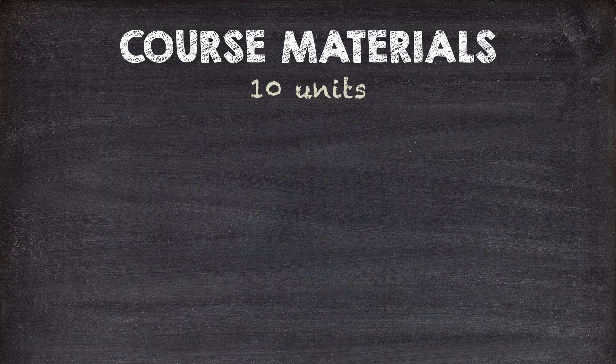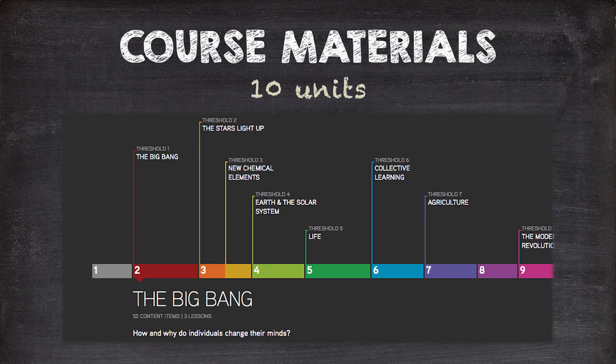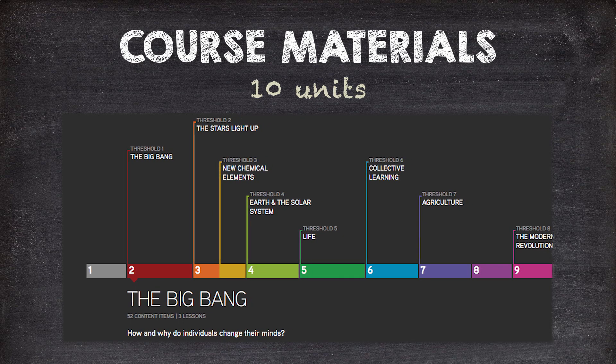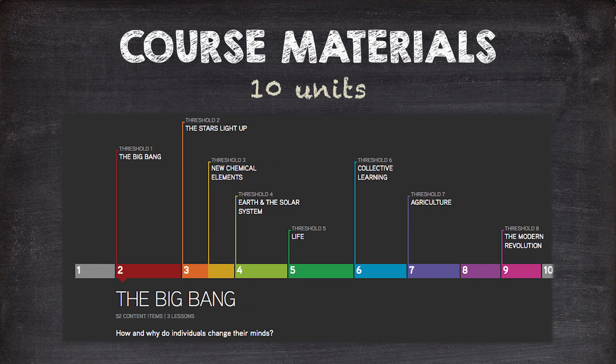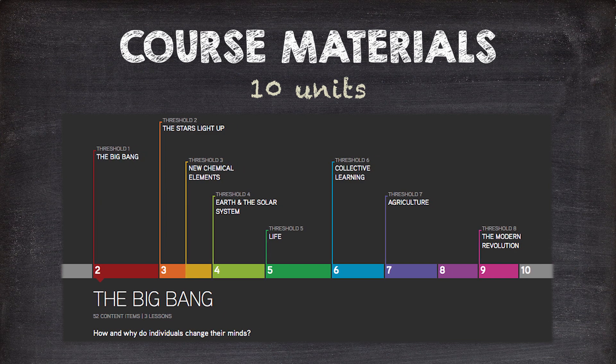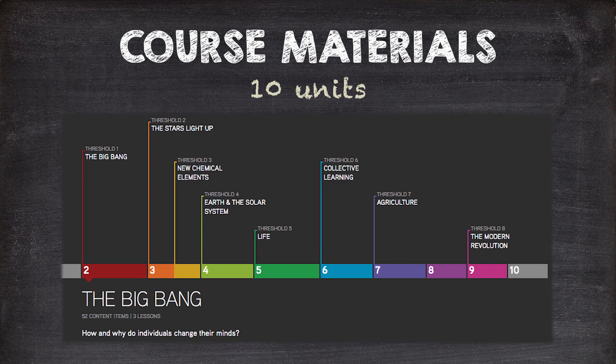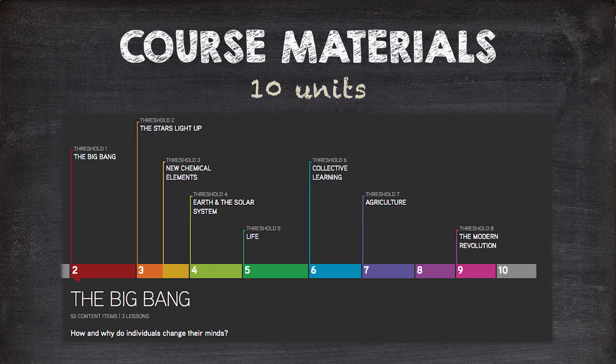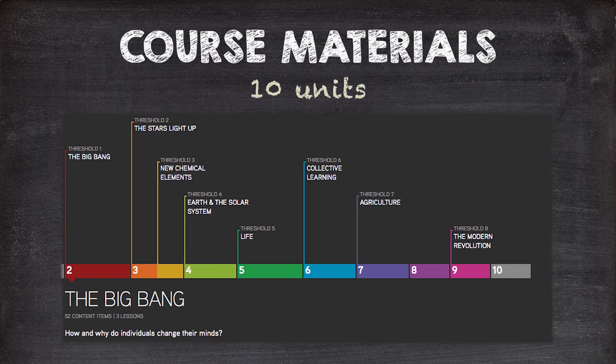A couple of key points about the structure of these units: they are not to scale. The early units, which focus on pre-human history, are much shorter than the later units. If the typical school year is 8 months, many teachers try to get all the way to Unit 6 by the beginning of the fourth month. We'll talk a lot more about pacing in another video, but it's probably one of the most important aspects of planning your year of teaching the Big History Project.